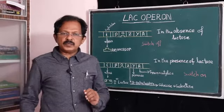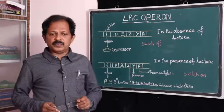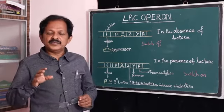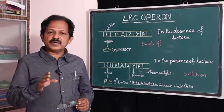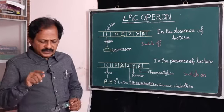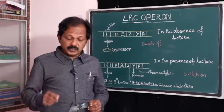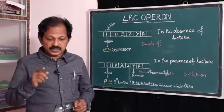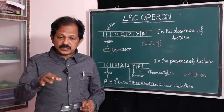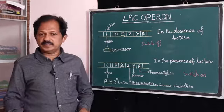The Lac Operon is a catabolic operon in which the structural genes are involved in the conversion of lactose into glucose and galactose. The Trp Operon, by contrast, is an anabolic operon in which the structural genes are involved in the synthesis of a product, namely tryptophan.